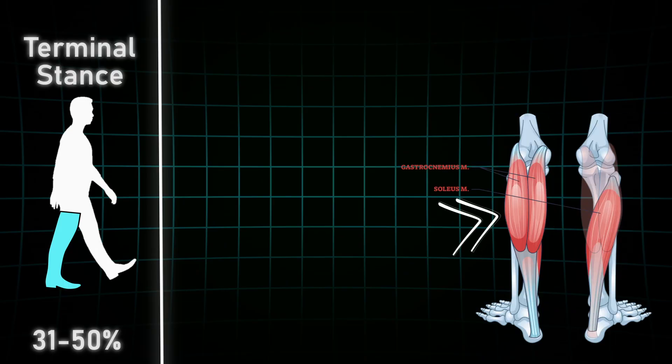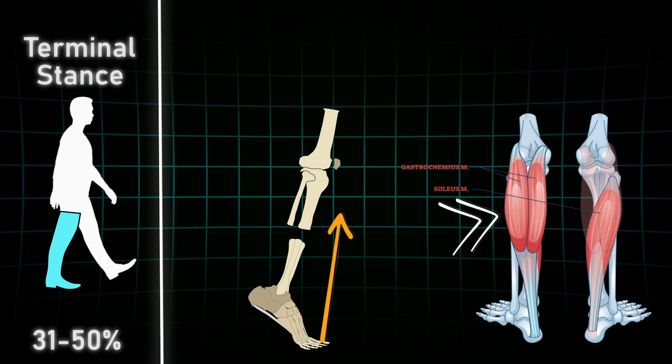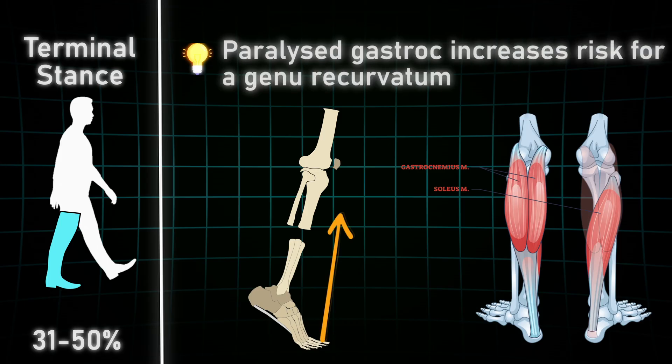The gastroc muscle is the main player now preventing the knee from getting hyper-extended. A paralyzed gastroc will then lead to an increased risk for a genu recurvatum. Let that sink in.